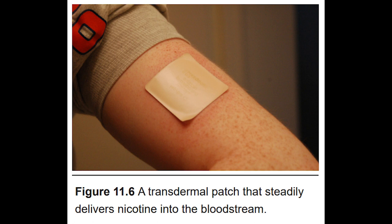Transdermal is another parenteral route of administration that avoids processing by the digestive tract. In transdermal administration, a substance is placed on the skin's surface, and over time the chemical diffuses through the skin into the blood vessels. The most common example is the nicotine patch, a nicotine replacement therapy. Transdermal patches have the advantage that the drug diffuses slowly over a prolonged period, up to 24 hours, minimizing misuse potential. However, because the skin is such an effective protective barrier, only small molecules and fatty lipids effective at milligram concentrations can be used.